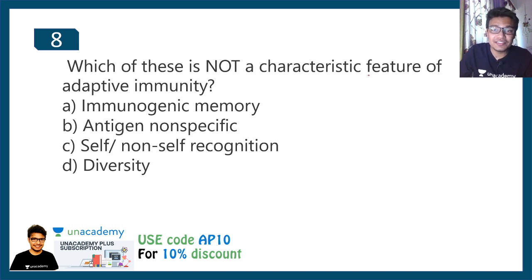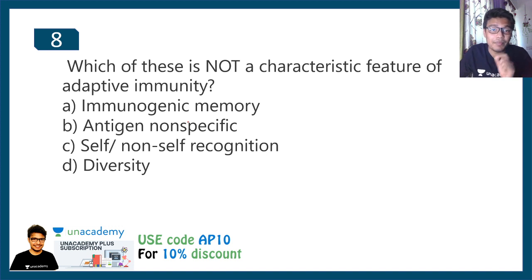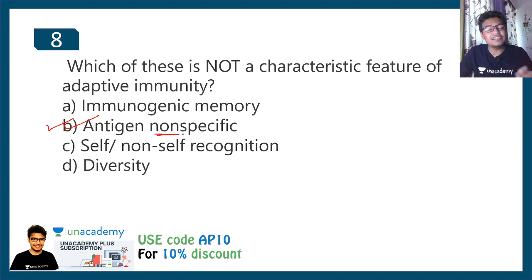Question eight: which of the following is NOT a characteristic feature of adaptive immunity — A) immunogenic memory, B) antigen non-specific interactions, C) self and non-self recognition, D) diversity? The biggest feature of adaptive immunity is that it is highly antigen-specific. Therefore, antigen non-specificity is NOT a feature of adaptive immunity — it is a feature of innate immunity instead.